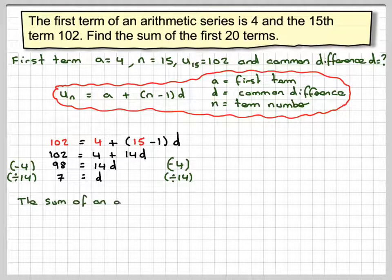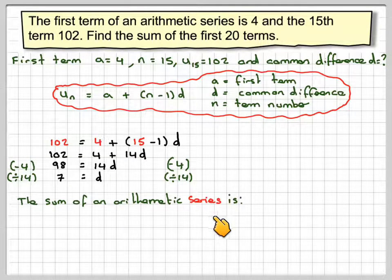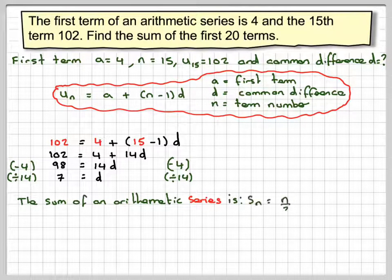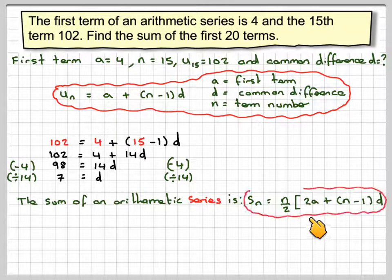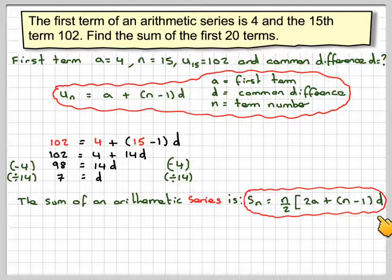Using the sum formula for an arithmetic sequence: S_N equals N over 2, times (2A plus (N minus 1) times D).